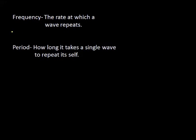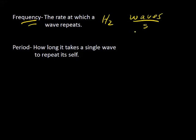Let's look at frequency and the period of a wave. The frequency of a wave is the rate at which a wave repeats itself. If you're standing next to the water and a wave crest passes you, then a second later another wave crest passes you, the rate at which the waves are passing you would be one Hertz, or one wave per second. Frequency is measured in Hertz, which is waves per second.